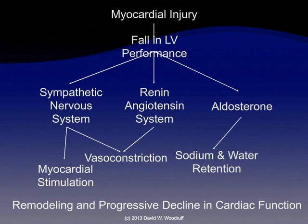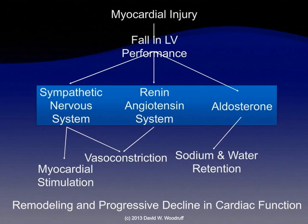In this slide, we're showing the process by which myocardial injury will result in the patient developing a decrease and decline in cardiac function. We see a fall in left ventricular performance followed by the stimulation of compensatory mechanisms: the sympathetic nervous system, the renin-angiotensin system, and aldosterone.